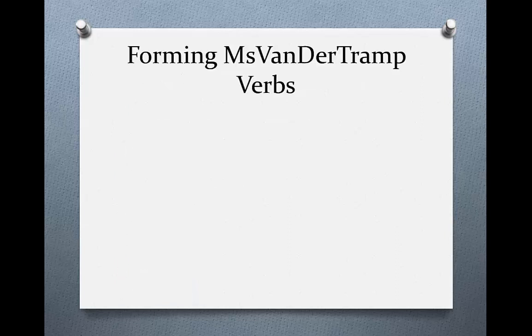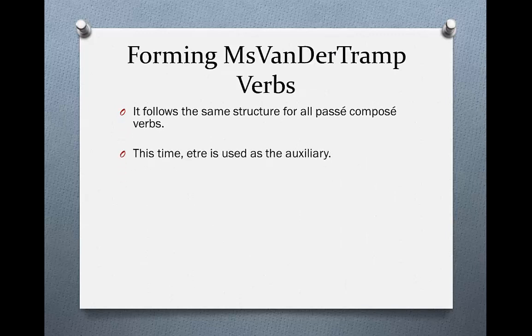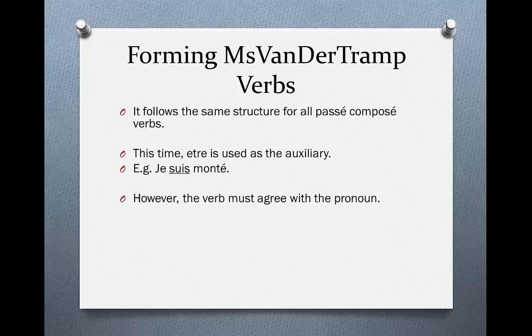So how do we form these Miss van der Tramp verbs? It follows the same structure as all passé composé verbs — all we have to do is add être as the auxiliary. For example, je suis monté. However, because we are using être, the past participle always has to agree with the pronoun. So, for example, nous sommes montés — because nous indicates plurality, we add an -s on the end.